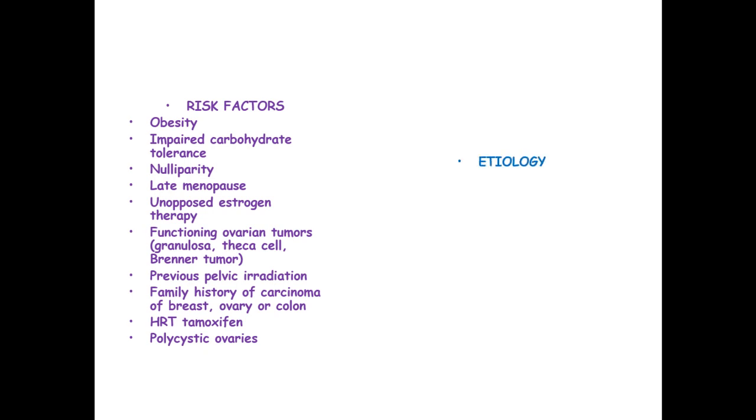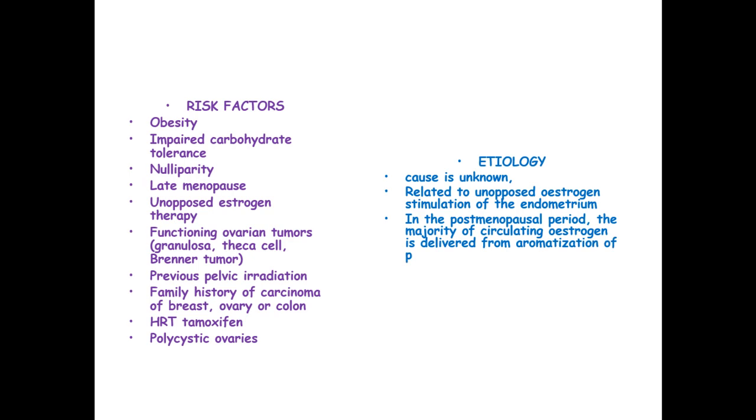The etiology of this endometrial carcinoma is not known like other cancers and it's related to unopposed estrogen stimulation of the endometrium. In the postmenopausal period, the majority of the circulating estrogen is delivered from the aromatization of peripheral androgens. Postmenopausal women with diabetes have increased estrogen levels.